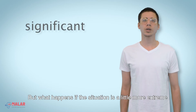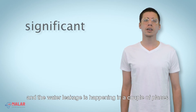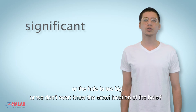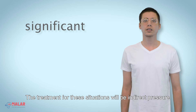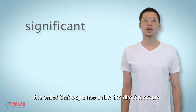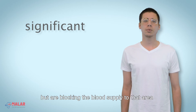But what happens if the situation is a little more extreme and the water leakage is happening in a couple of places, or the hole is too big, or we don't even know the exact location of the hole? The treatment of these situations will be indirect pressure. It is called that way because unlike direct pressure, we are not dealing with the specific haemorrhage but are blocking the blood supply to the area.